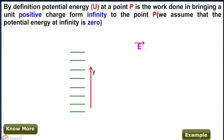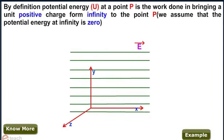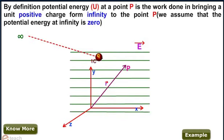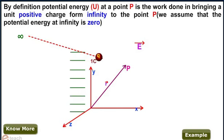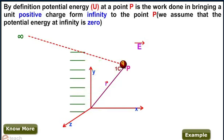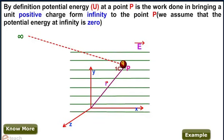By definition, potential energy U at a point P is the work done in bringing a unit positive charge from infinity to that point P. We assume that the potential energy at infinity is zero.